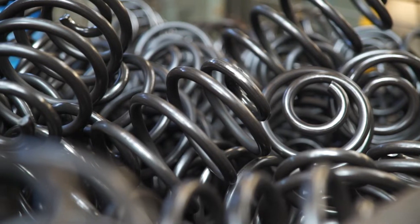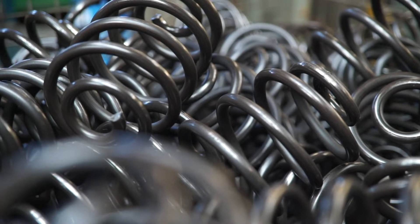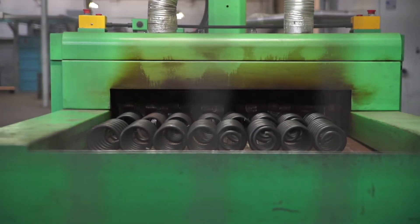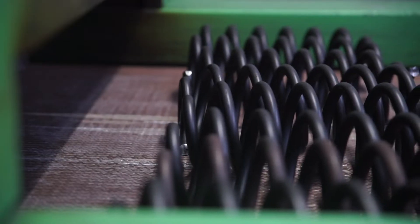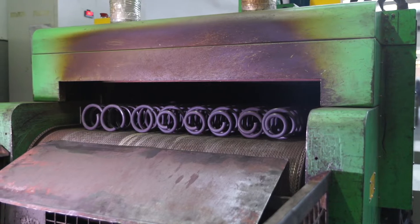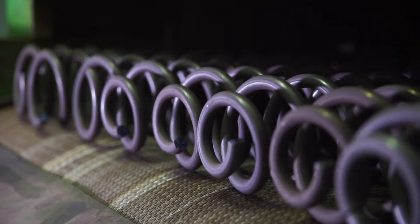The coiling process causes internal stresses in the wire structure which have to be eliminated. This is done by heat treatment. Springs are heated at 400 degrees Celsius. Thanks to the heat treatment process, they get their springiness.